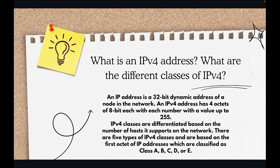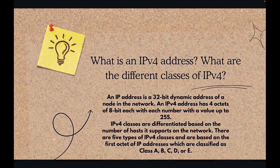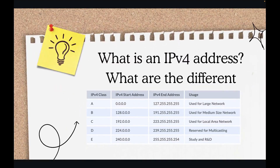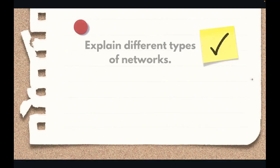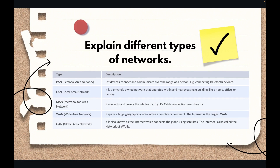The second question is: what is an IPv4 address and what are the different classes of IPv4? An IPv4 address is a 32-bit address of a node in a network. It has 4 octets of 8 bits each, with values ranging up to 255. The classes of IPv4 are A, B, C, D, and E. This is a widely asked and must-know question for a network engineer role — they will ask about the different classes and their ranges.